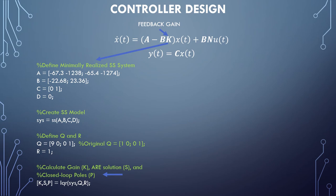Finally, the gain matrix K is calculated using MATLAB's LQR function. The function also returns the solution to the algebraic Riccati equation and the new poles of the closed loop system.